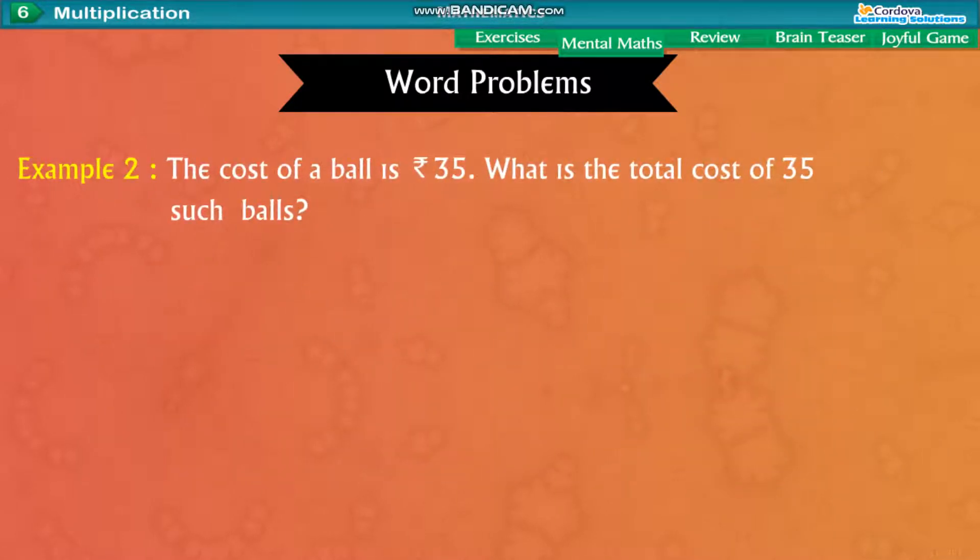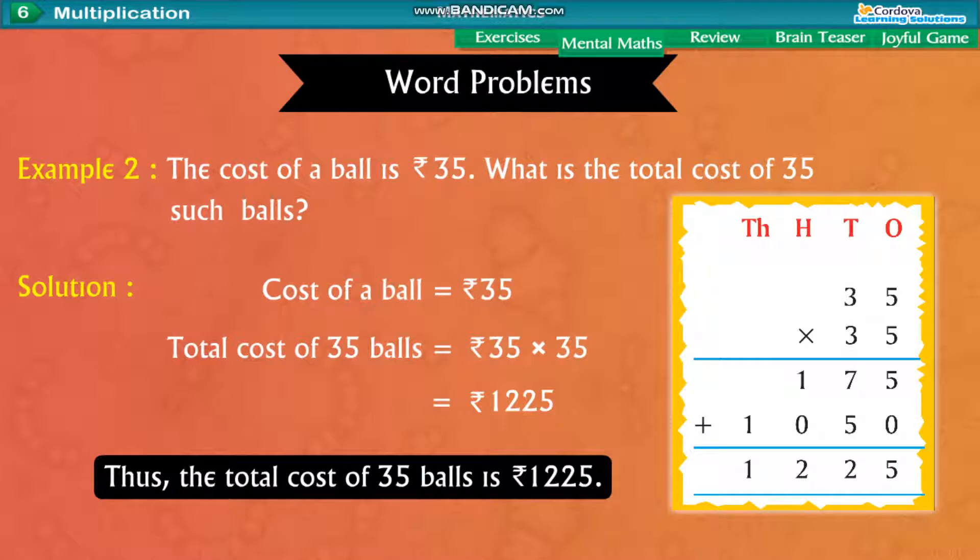Example 2. The cost of a ball is 35 rupees. What is the total cost of 35 such balls? Solution. Cost of a ball equal to 35 rupees. Total cost of 35 balls equal to 35 into 35 rupees equal to 1,255 rupees.